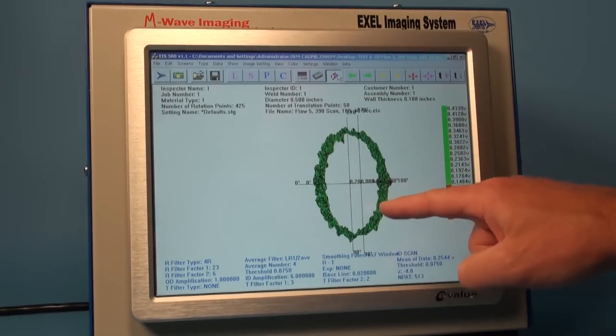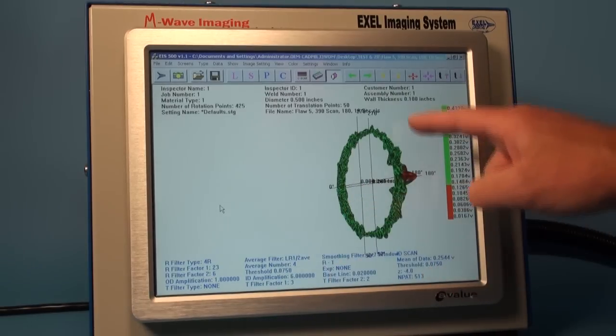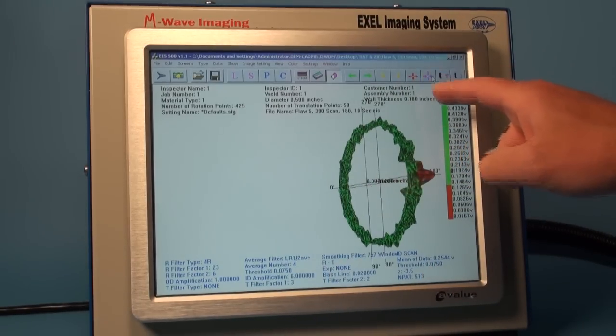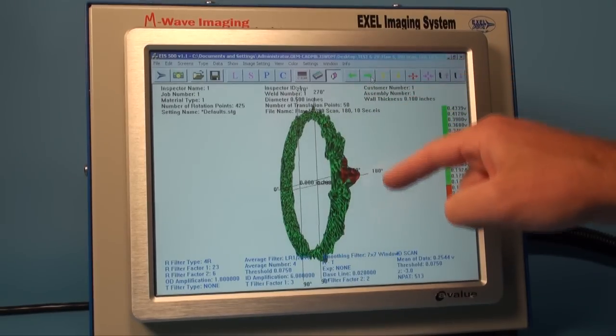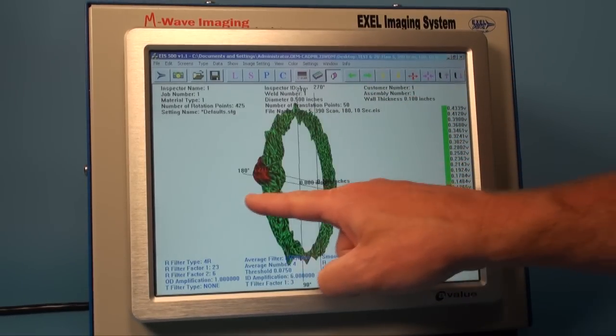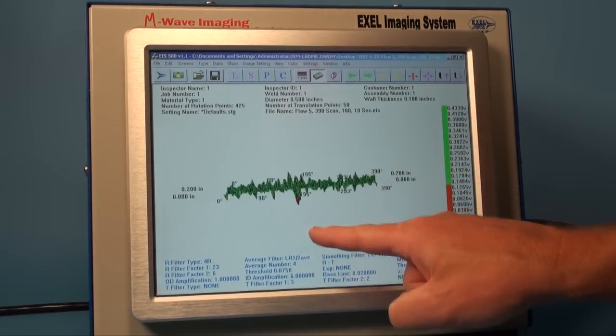The polar view allows the operator to see the flaw as it would appear in the tube. This helps with definitive angular location of defects. Moving to and from different view modes is easy with the touch screen controller.